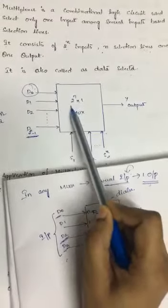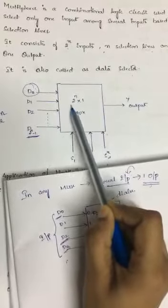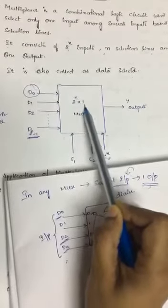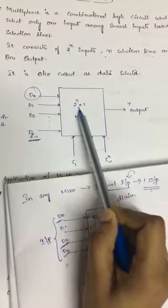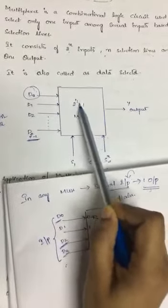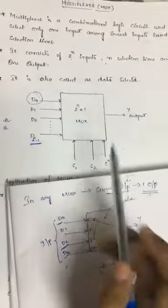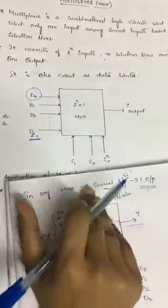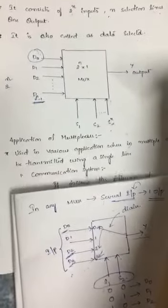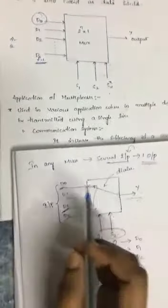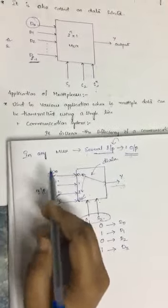The notation 2^n by 1 represents that you apply 2^n inputs and get one output. The 2^n represents the number of inputs and 1 represents the number of outputs. Next, we will see what are the applications of the multiplexer and what is its use.